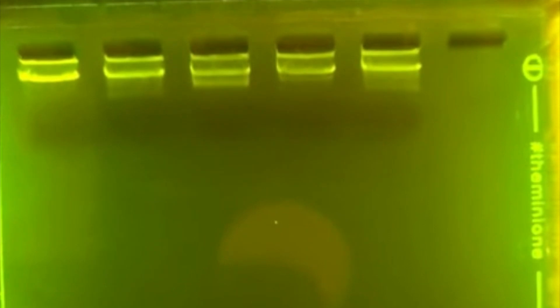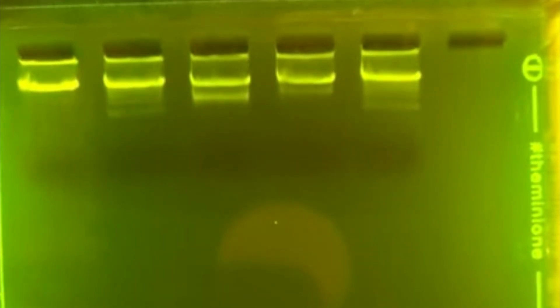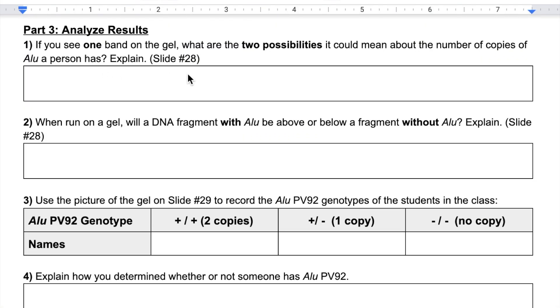DNA has a negative charge and will move toward the positive end of our gel box. One way we can then see the DNA is to stain it and, in this example, expose it to LED light. To see our sample results, we'll head back to our student guide and lesson slides.